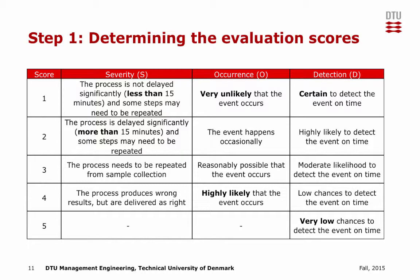In this example, a 4-grade scale has been defined for severity and occurrence, and a 5-grade scale for detection. For severity: a score of 1 if the process is not delayed significantly — less than 15 minutes — and some steps may need to be repeated; a score of 2 if the process is delayed significantly — more than 15 minutes; a score of 3 if the process needs to be repeated entirely; and a score of 4 if the process produces wrong results that are delivered as correct. For occurrence, a score of 1 means it is very unlikely the event occurs, and a score of 4 means it is highly likely. For detection, a score of 1 means the event is certain to be detected on time, and a score of 5 means there are very low chances of detecting the event on time.